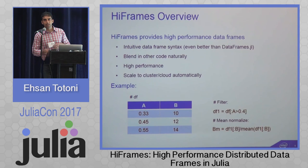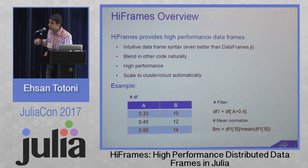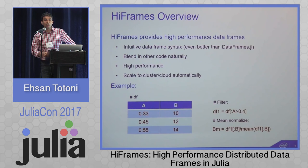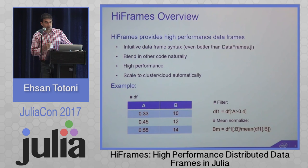We take this DF1 data frame with just those two rows and perform mean normalization — taking the values of column B and dividing them by the mean of all values. Very simple syntax to filter then mean normalize. Now imagine the same data frame having billions of rows and running on thousands of cluster or cloud nodes. We want the same syntax to work without any change on this large-scale system — this is the goal we actually achieve in this project.